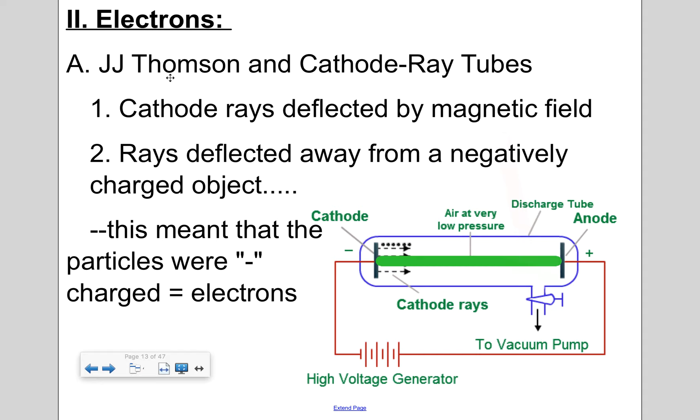So the first discovery of a subatomic particle was actually the electron and it was discovered in the late 1800s. And a lot of experiments at that time dealt with electric currents passing through a lot of gases at some low pressures. And as you can see here, this is a rough diagram of a cathode tube.